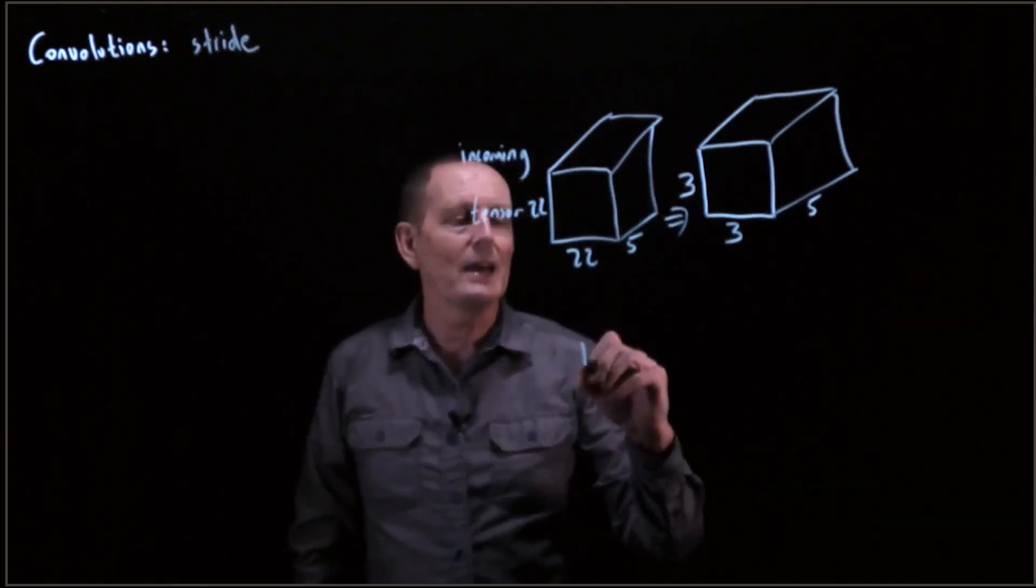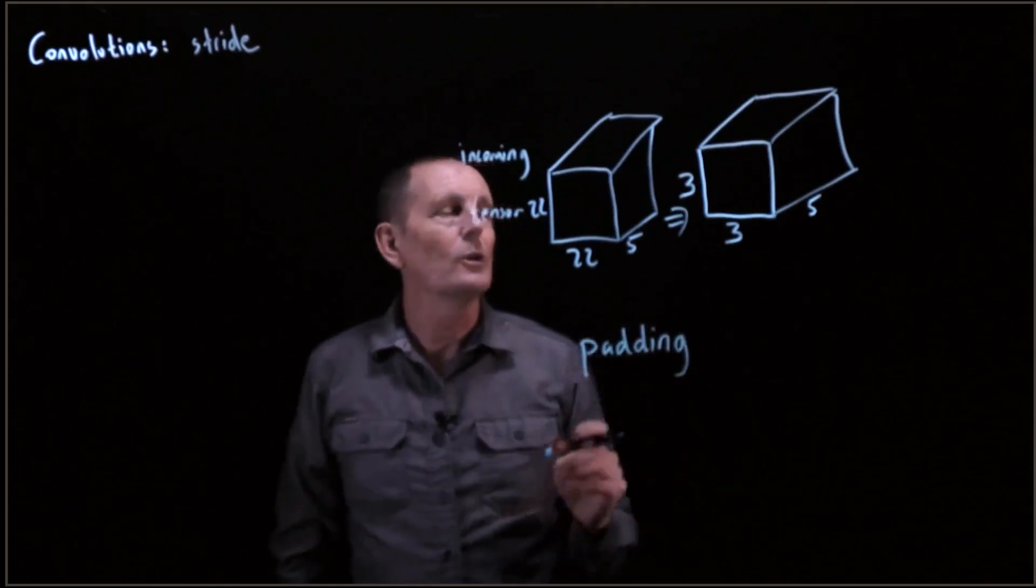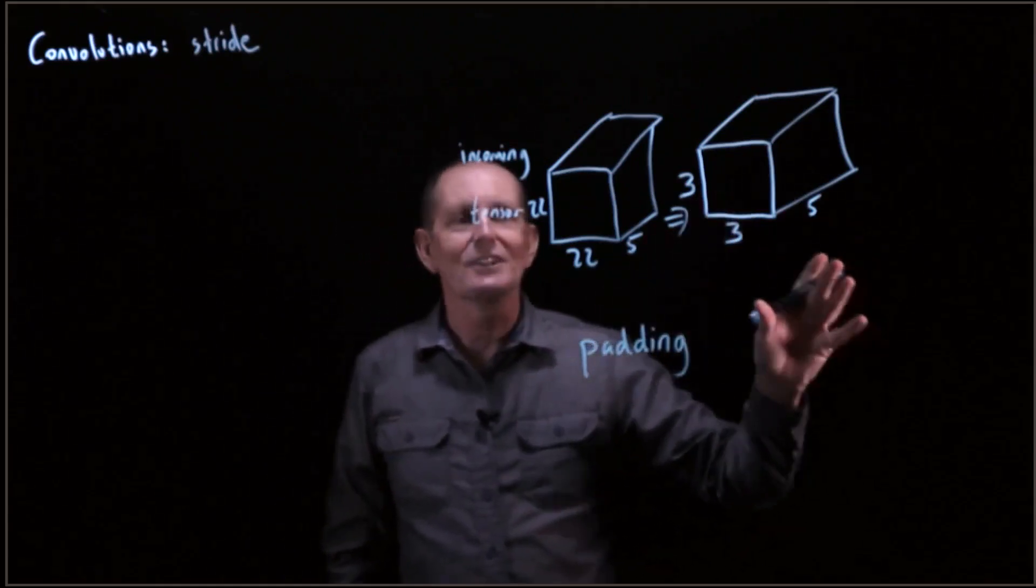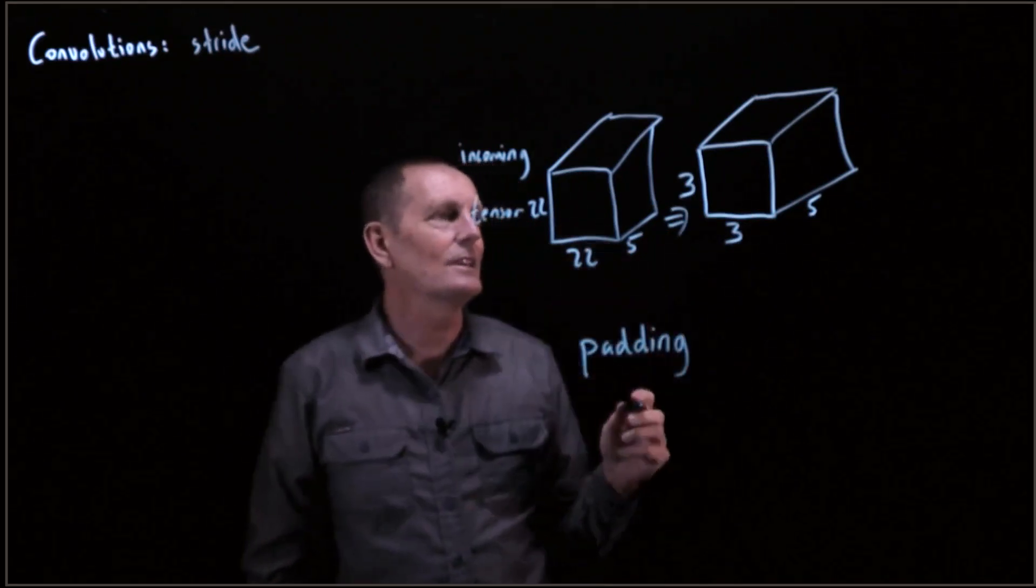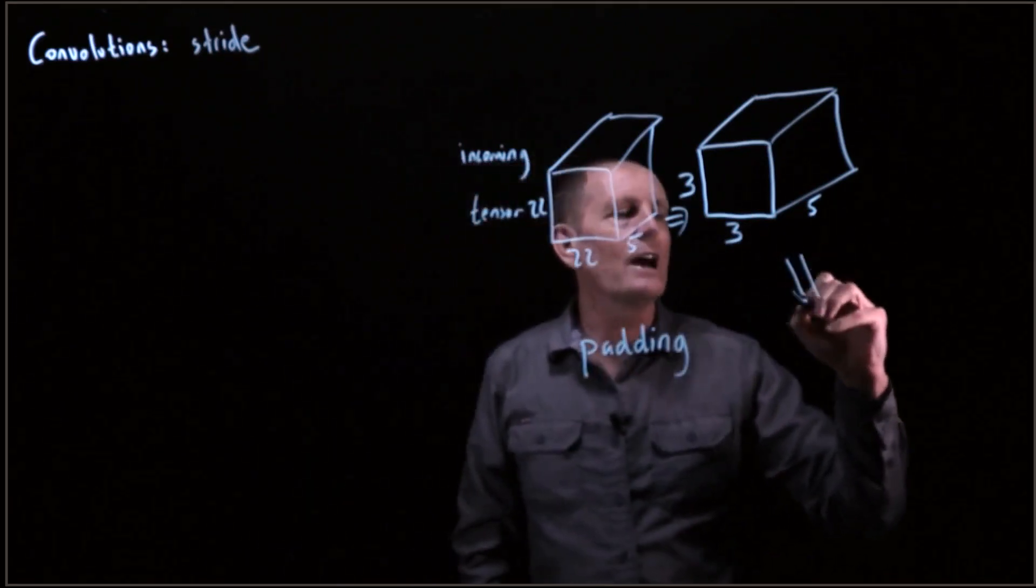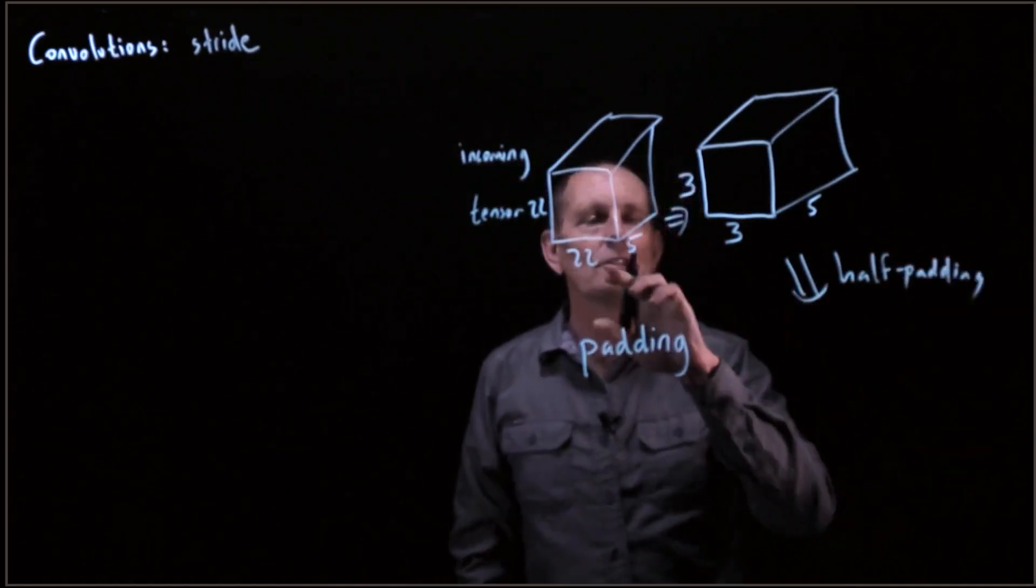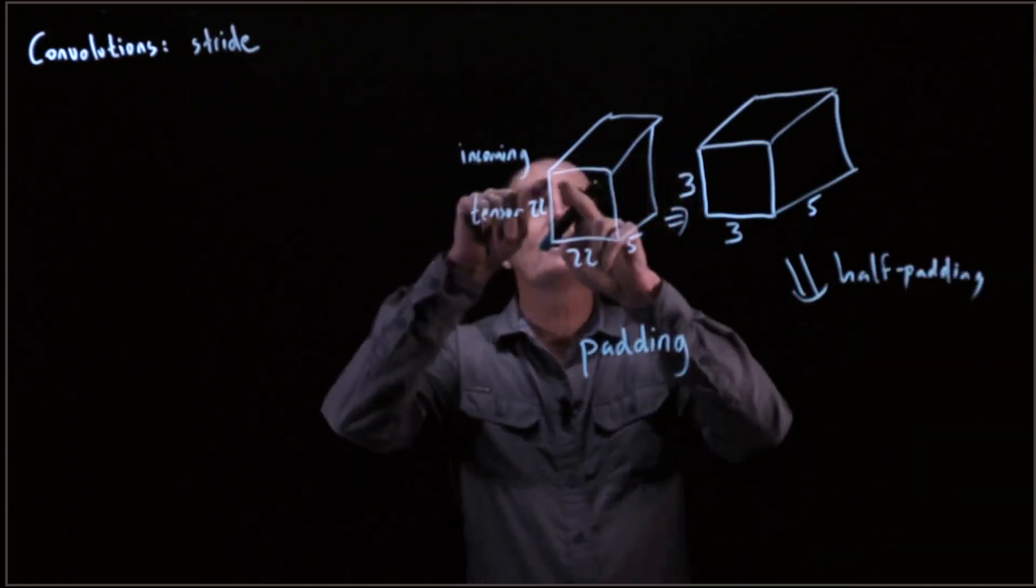We've talked about the fact that we have padding, which controls whether an output is going to be the same size as the input. If we have half padding, then we would get for this 22 by 22 by 5,